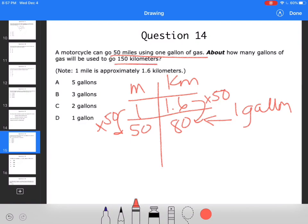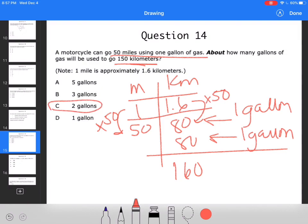To get to 150, 80 plus 80, so that would be another gallon, right? So 80 plus 80 is 160, so that would be about two gallons is all I would need.